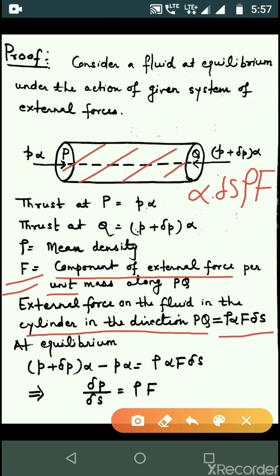Now at equilibrium we have three forces: P alpha, P plus delta P alpha, and the external force. The external force balances these two thrusts, so P plus delta P alpha minus P alpha equals rho alpha F delta S. This gives del P by del S equal to rho F.